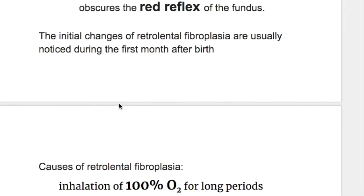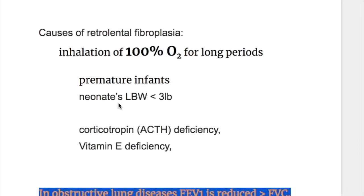Initial changes of retrolental fibroplasia are usually noticed during the first month after birth. Contributing factors include inhalation of high oxygen concentration for a long period in premature infants, especially those with low birth weight of less than three pounds. Deficiency of corticotrophin and vitamin E may also lead to the condition.